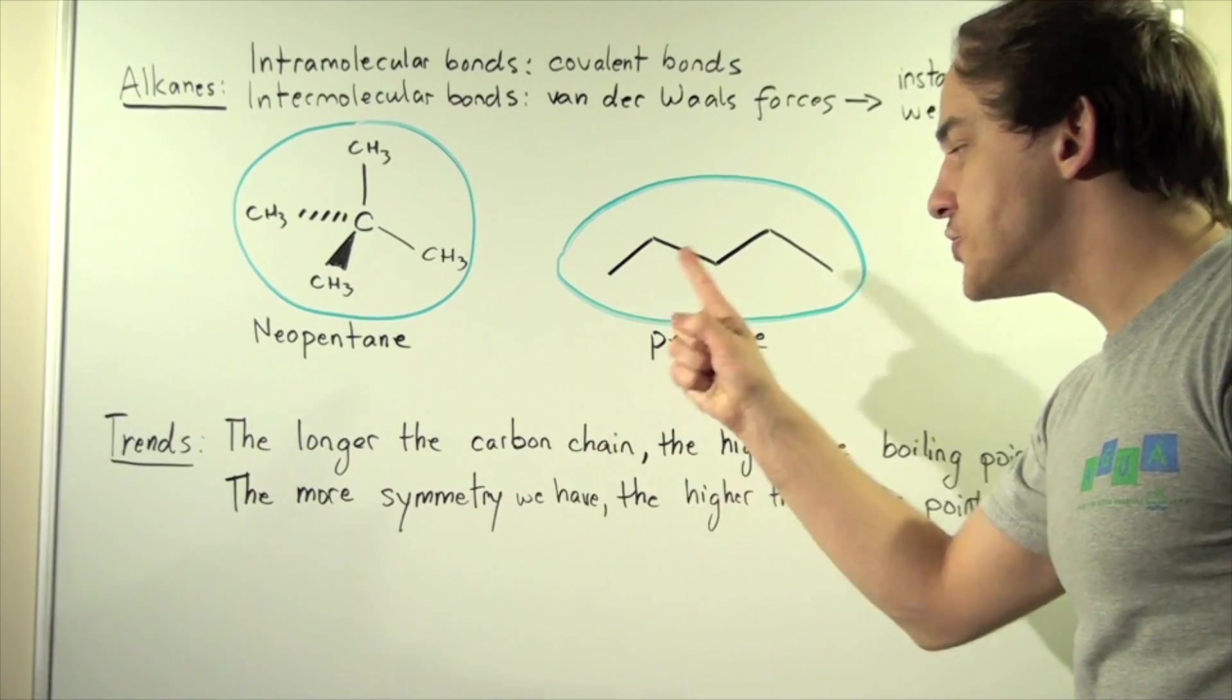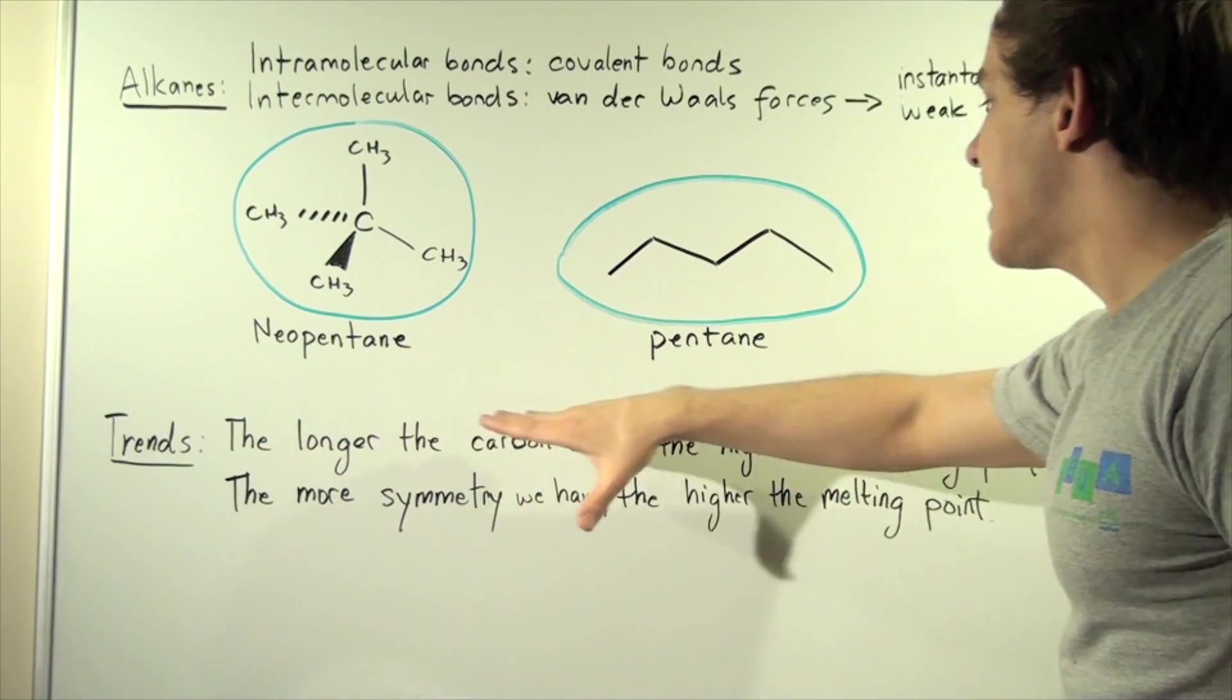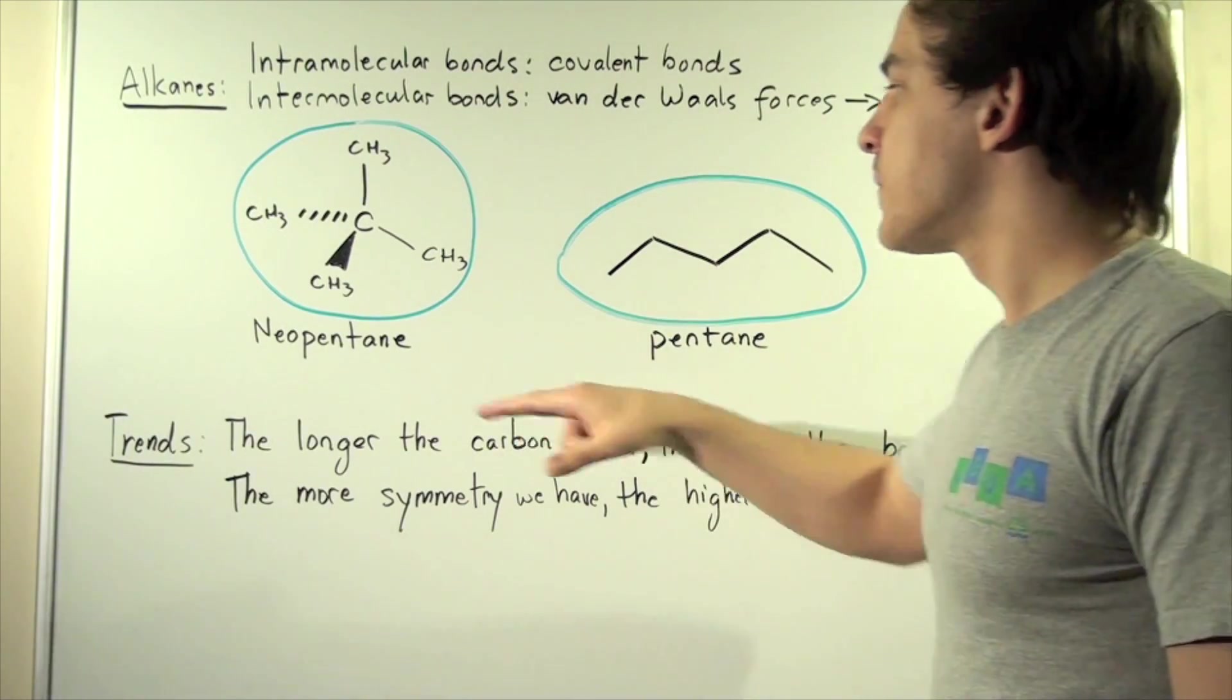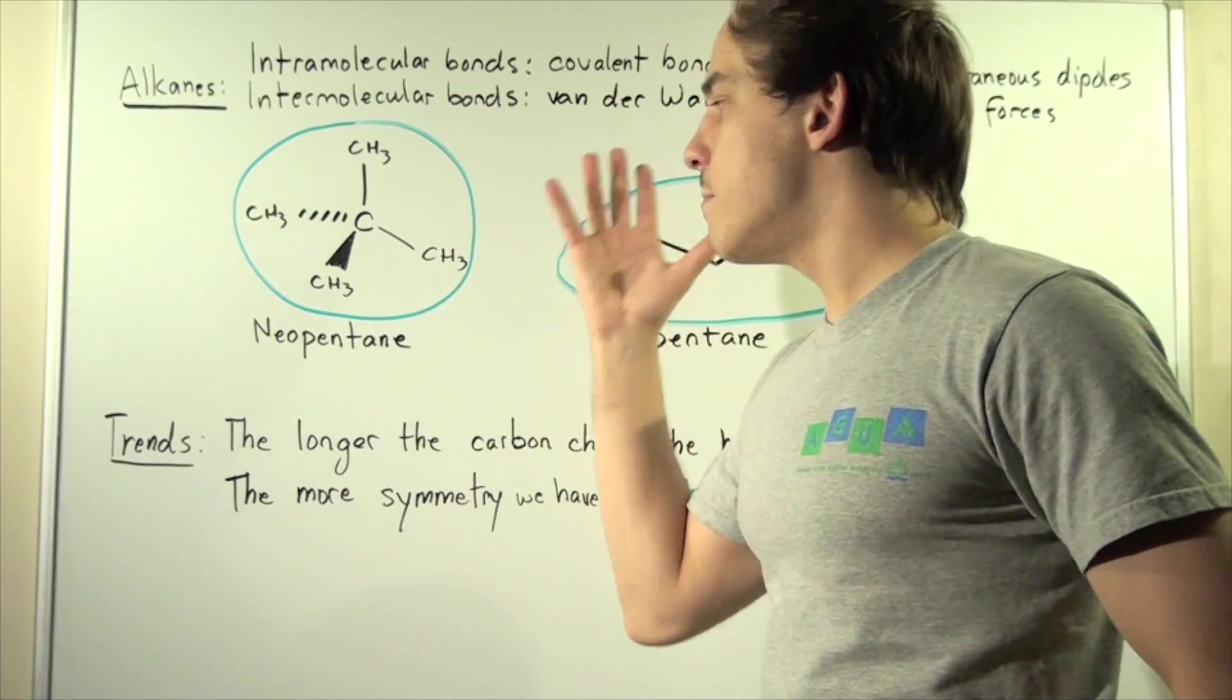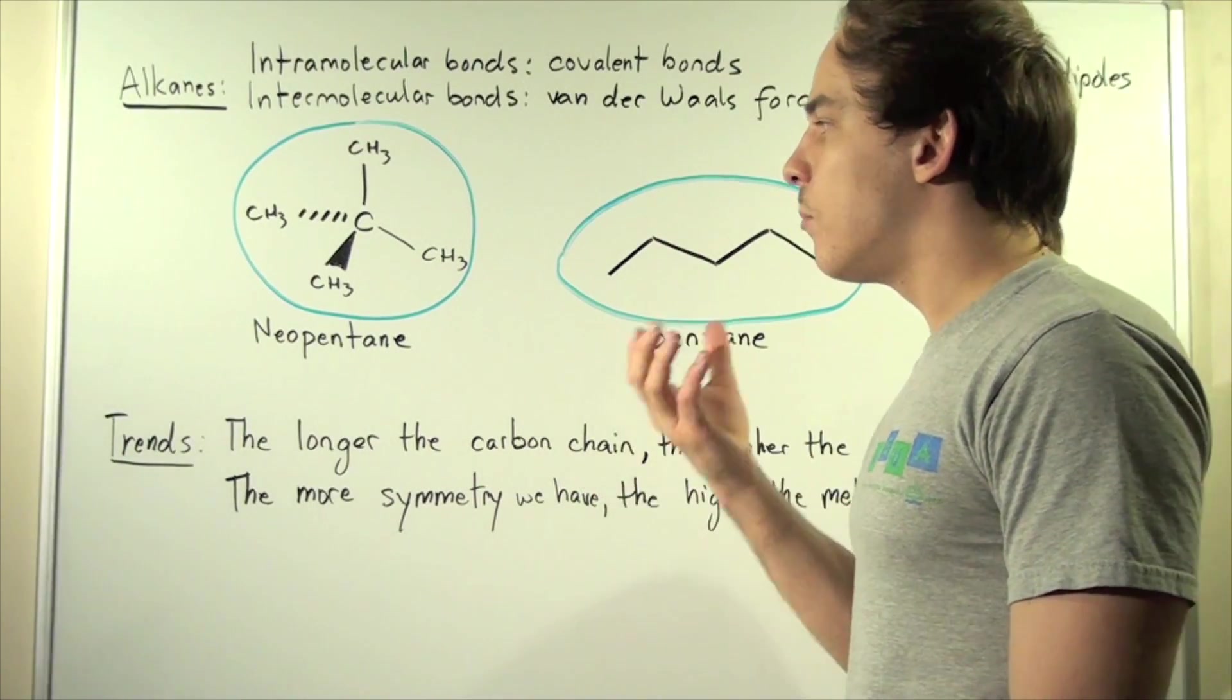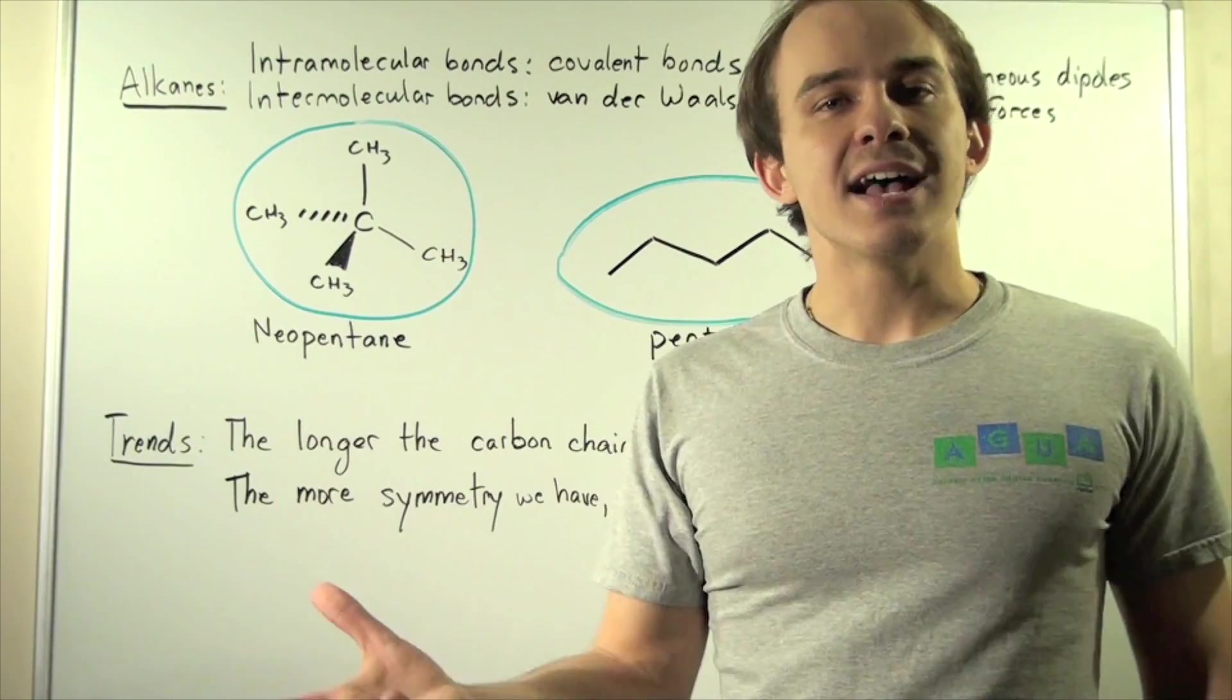So the longer the carbon chain is, the higher the boiling point. So why is that? What that statement states is that this longer pentane molecule will have a higher boiling point than neopentane, which is shorter and more symmetrical. Now, let's define what a boiling point is. The boiling point is the point at which our pentane or neopentane goes from liquid to gas.